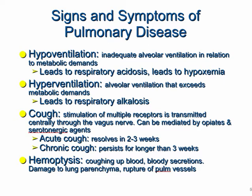Cough is a big presenting complaint. There are multiple receptors transmitted centrally through the vagus nerve. A lot of the medications we use can be mediated through this process — a big one is opiates. We use codeine cough medicine a lot to suppress cough. This is an example of how the whole process occurs and what we can do to intervene.